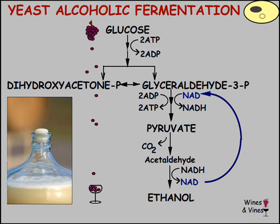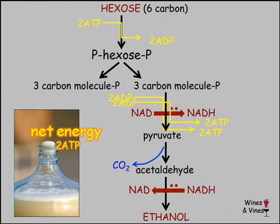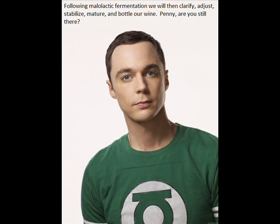Pyruvate is then broken down into acetaldehyde and carbon dioxide, and acetaldehyde is then converted to ethanol through the conversion of one molecule of NADH back to one molecule of NAD+. The process results in two molecules of ethanol and two molecules of carbon dioxide for every molecule of glucose, as well as the net production of two molecules of ATP. Following malolactic fermentation, we will then clarify, adjust, stabilize, mature, and bottle our wine.